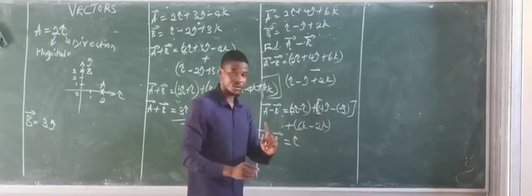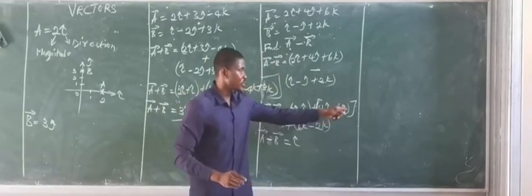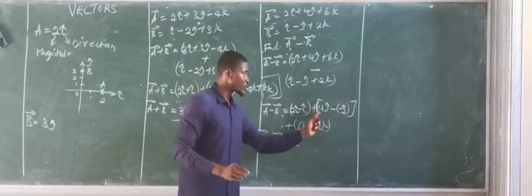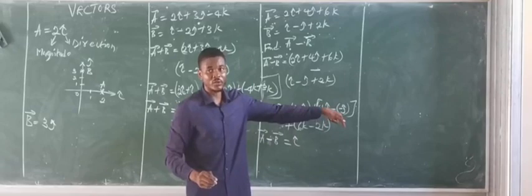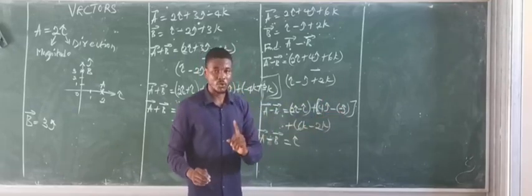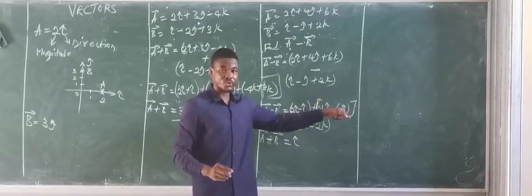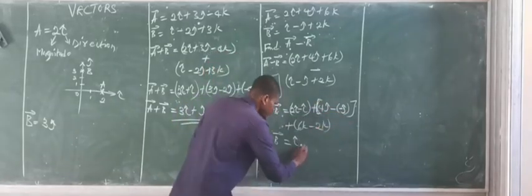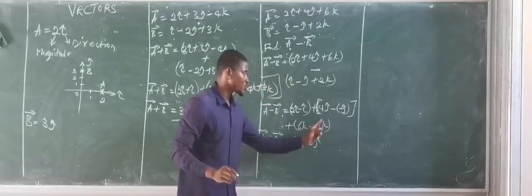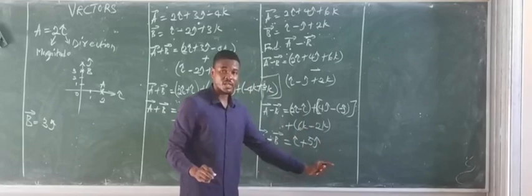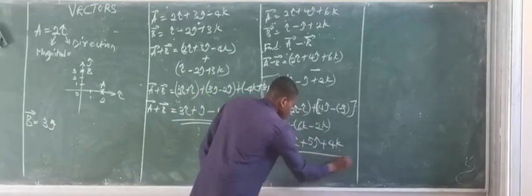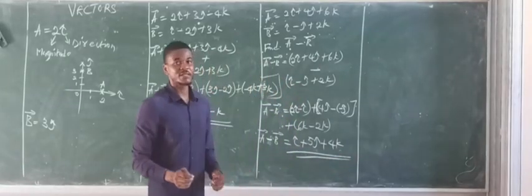So the result: 2I minus I is simply I, because 2 minus 1 is 1. Then 4J minus minus J — minus minus gives us plus — so it becomes 4J plus J, which gives 5J. Finally, 6K minus 2K equals 4K. So the answer is I plus 5J plus 4K. That's how we subtract vectors.